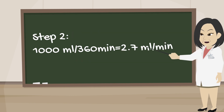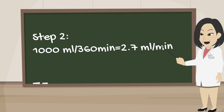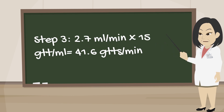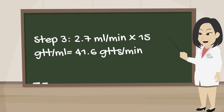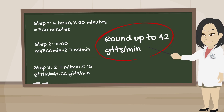Next, you'll divide 1000 milliliters by 360 minutes to get a total of 2.7 milliliters per minute. Then, multiply 2.7 milliliters per minute by the drop factor of 15 drops per milliliter, which is 41.6 drops per minute, which you will then round up to 42 drops per minute.